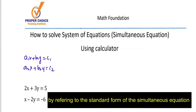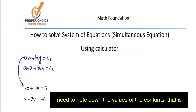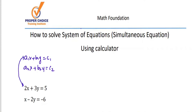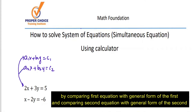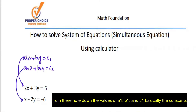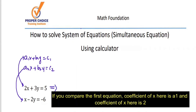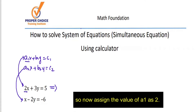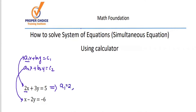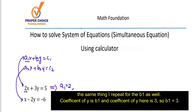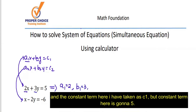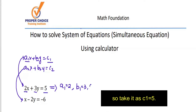By referring to the standard form of the simultaneous equation, I need to note down the values of the constants by comparing the first equation with the general form. The coefficient of X in the first equation is 2, so A1 = 2. The coefficient of Y is 3, so B1 = 3. The constant term is 5, so C1 = 5.